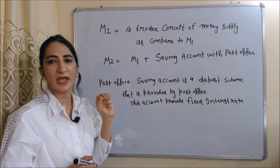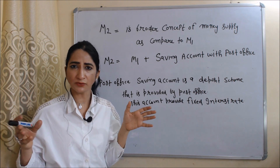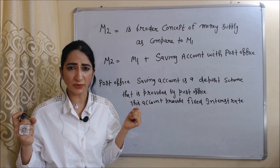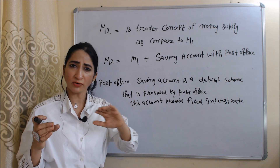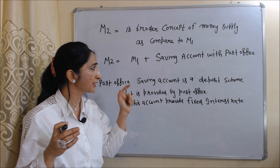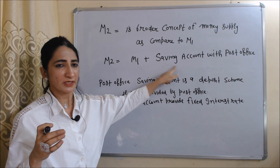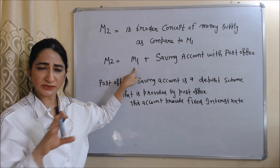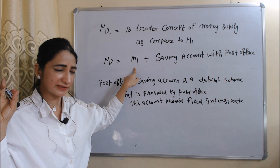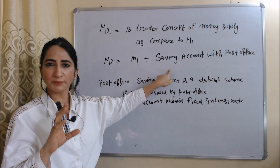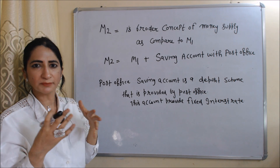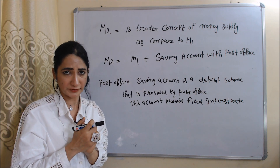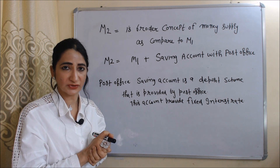M2 is a broader concept as compared to M1. M2 consists of all components of M1 plus saving accounts with post office. So M2 equals M1 plus saving account with post office. As we know, saving account with post office is a deposit scheme provided by the post office, and in this account they provide a fixed interest rate.